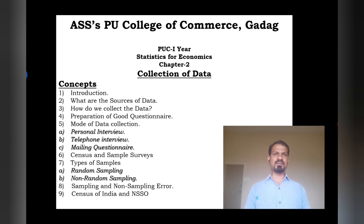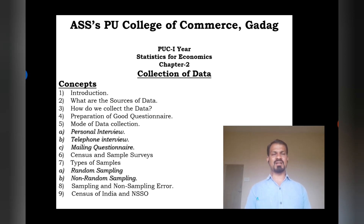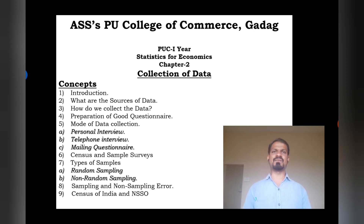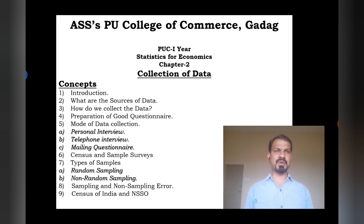If we see the concepts in this second chapter — collection of data — the introduction covers why we need to collect data and what kind of advantage we get from that data, or how data helps us. We also understand what are the sources of data: where this data can be obtained. There are two kinds of sources of data: primary data source and secondary data source.